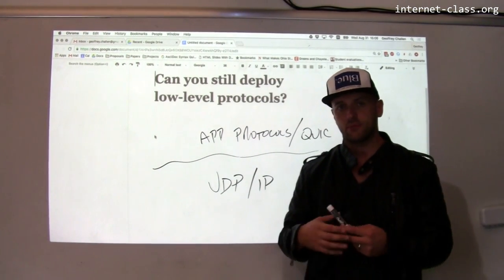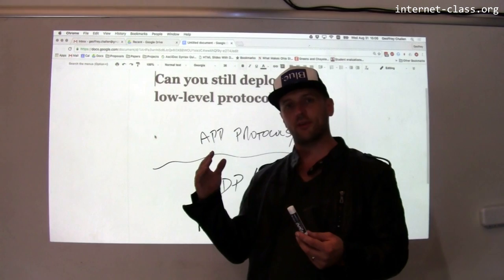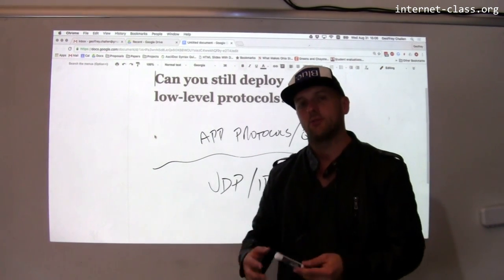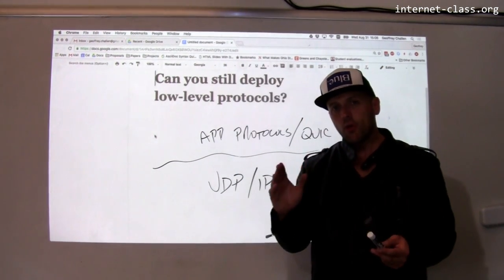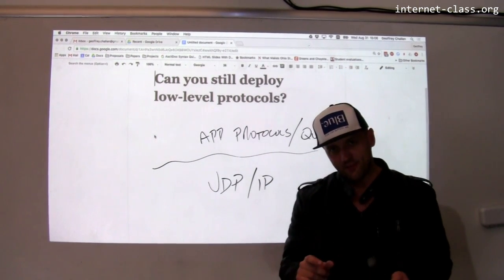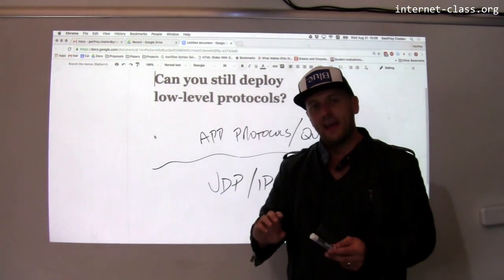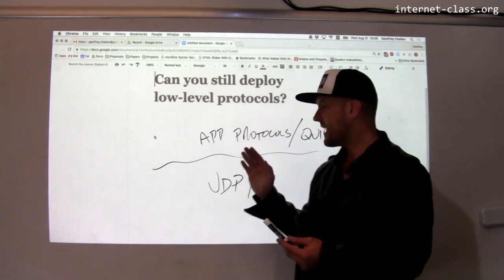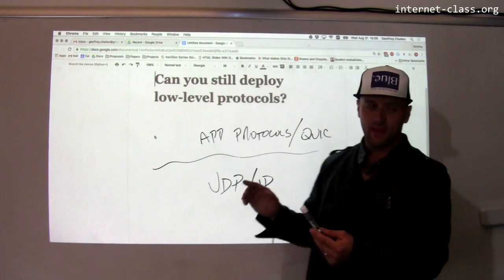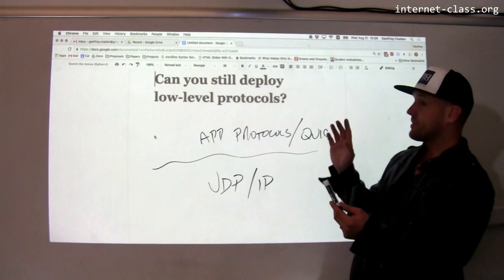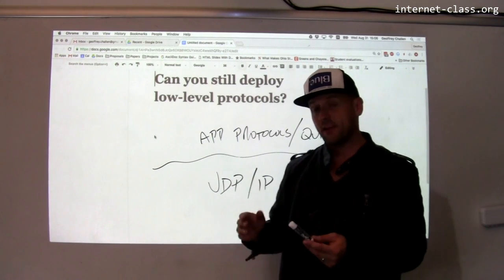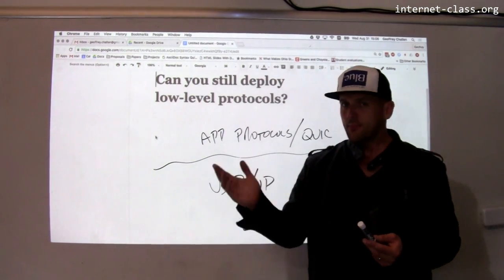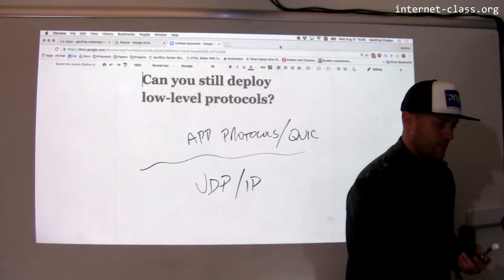If you've installed Google's browser Chrome and go to a Google website like Gmail or Google Drive, Google wrote the client running on your machine — Chrome — and they control the server Chrome is talking to. That gives them a chance to roll out QUIC. In fact, if you use Chrome and sites like Gmail, you're probably already using this new transport protocol.